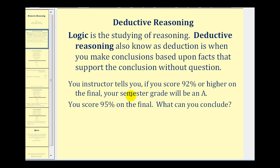For example, if your instructor tells you that if you score ninety-two percent or higher on the final your semester grade will be an A, and you score ninety-five percent on the final, you can conclude that your semester grade will be an A. This is a form of deductive reasoning because it's based upon the given statement or facts that you know to be true.